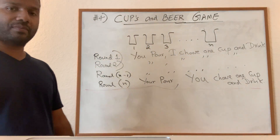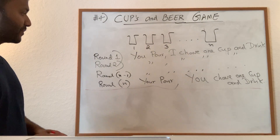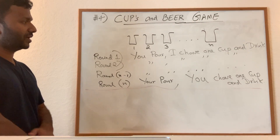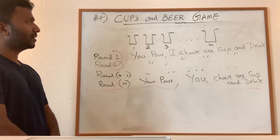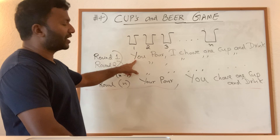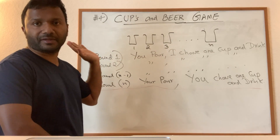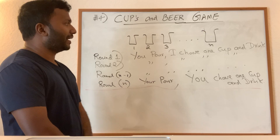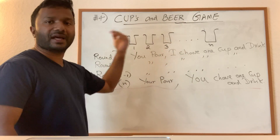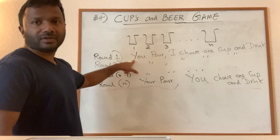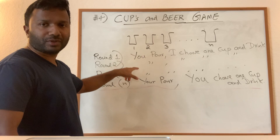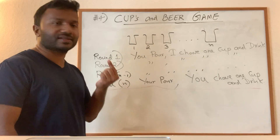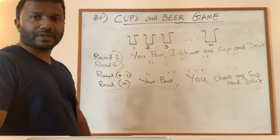The question is: what strategy should you follow to maximize the amount of beer you get at the end of the game? One strategy is to pour that one liter fully into one cup every time. But then I'll just pick that cup and drink it. You get nothing from rounds one through N minus one, and in the last round you get your one liter — so your total is just one liter. Not good enough.